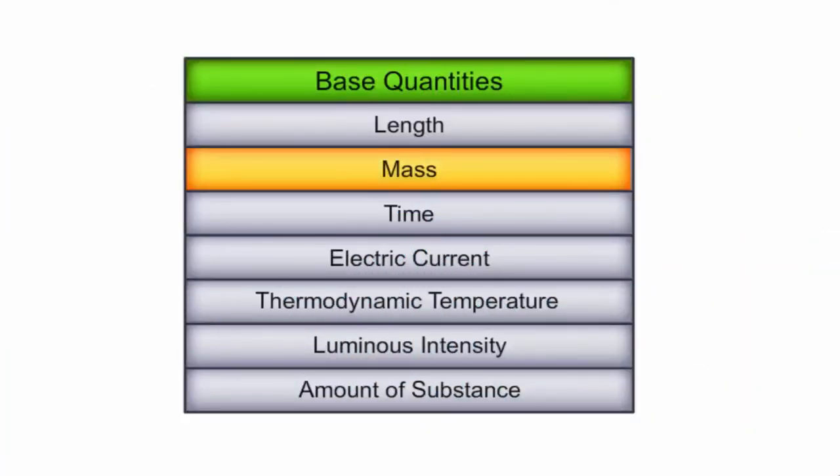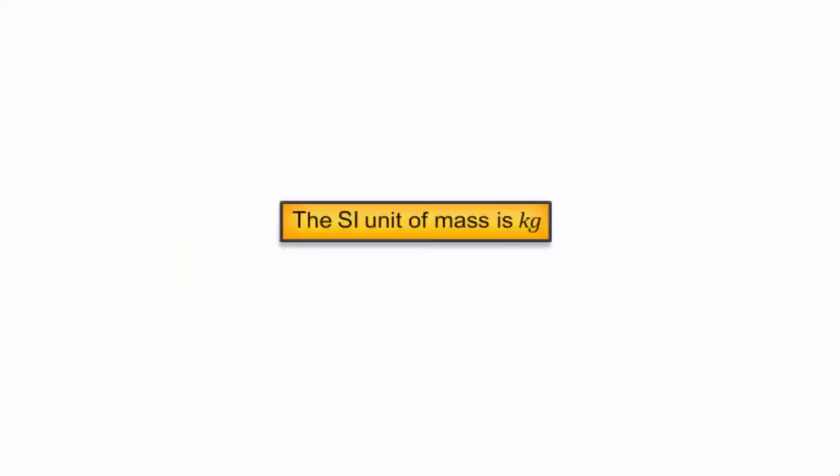Mass is the basic property of matter and a fundamental unit of measurement since its measurement does not depend on any other physical quantity. The SI unit of mass is kilogram, denoted by small letters kg.